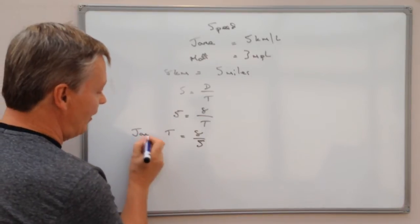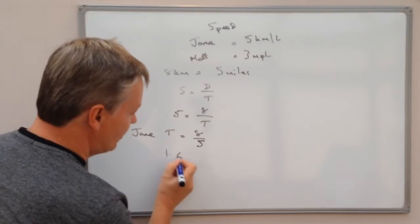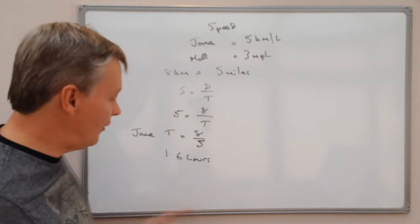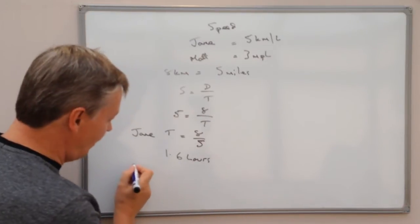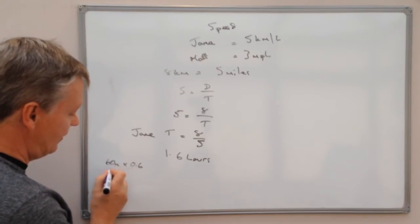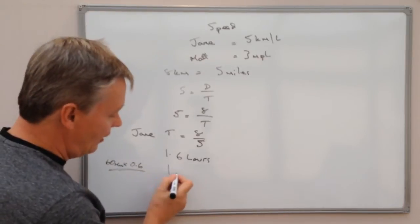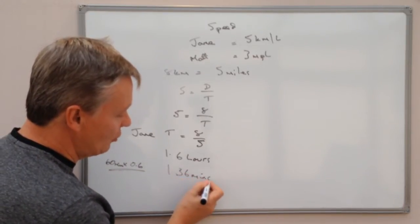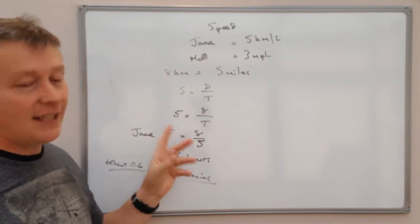Jane's time is 1.6 hours. Just for clarity, 0.6 of an hour — if I multiply 0.6 by 60 minutes — gives us 1 hour and 36 minutes. And that's how long Jane took to walk this 8 kilometres.